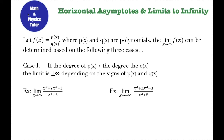Hi everyone, today we're going to talk about horizontal asymptotes and limits to infinity. When I'm finding the horizontal asymptote of a function, I'm usually looking at a function that's defined as a quotient of two functions where the numerator and the denominator are polynomials. If that's the case, then there are three different things that can happen that will tell me what my limit to infinity is and what, if any, horizontal asymptote I have. When looking at my numerator and my denominator, I'm going to be comparing the degree of the numerator to the degree of the denominator.